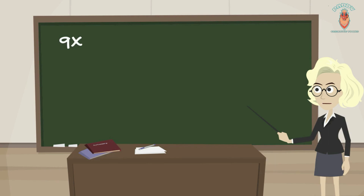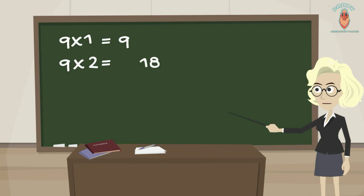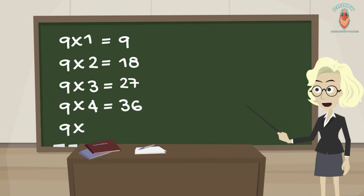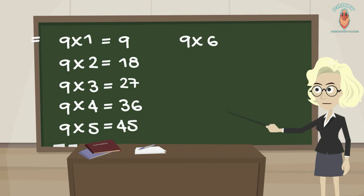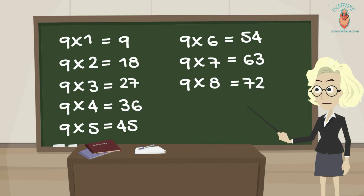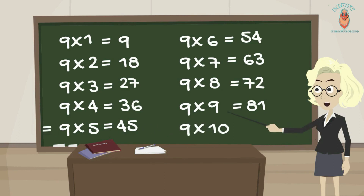9 1s are 9, 9 2s are 18, 9 3s are 27, 9 4s are 36, 9 5s are 45, 9 6s are 54, 9 7s are 63, 9 8s are 72, 9 9s are 81, 9 10s are 90.